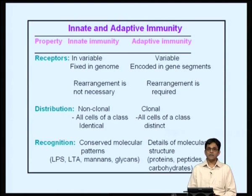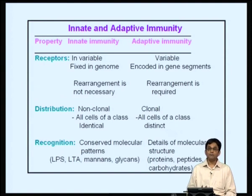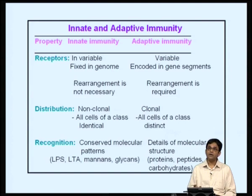The innate immune response recognizes conserved molecular patterns — for example, molecules present on microbial surfaces such as lipopolysaccharide, lipoteichoic acids, mannans, and so on. In the case of the adaptive immune response, B cell receptors and T cell receptors are able to find minute differences between molecular structures, including small changes present between different kinds of bacteria or pathogens, especially in the case of proteins and peptides.